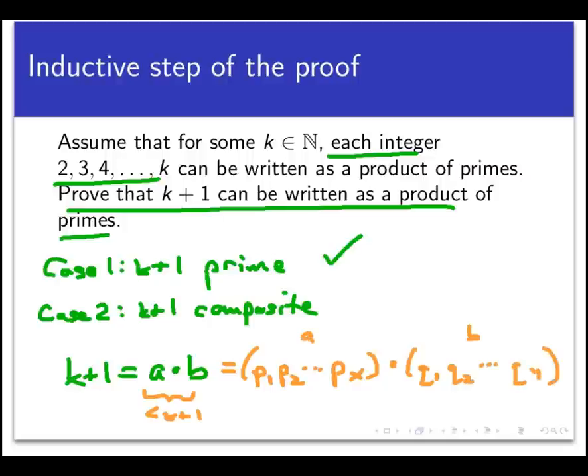So how do we get k plus 1's factorization? Well, just simply by substitution. Just multiply those two strings of primes together, and we're going to get k plus 1, which is equal to a times b, is actually equal to all the p's multiplied together times all the q's multiplied together. And then we're done.